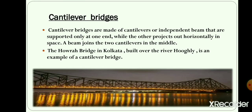A cantilever bridge is made of steel or concrete. It consists of two beams called cantilevers. The famous Howrah Bridge in Kolkata, built over the river Hooghly, is a cantilever bridge. It was built by the British between 1937 and 1943.